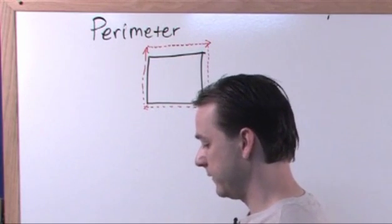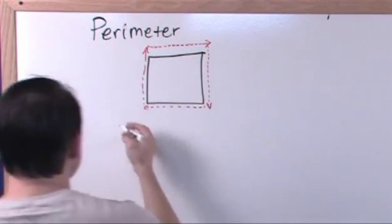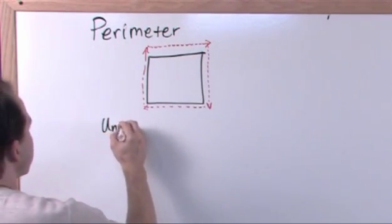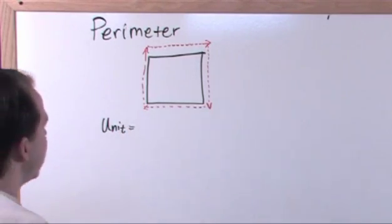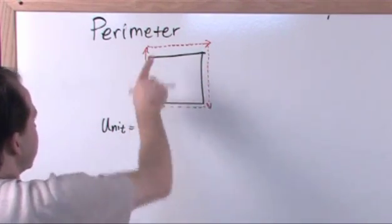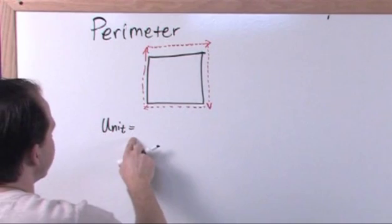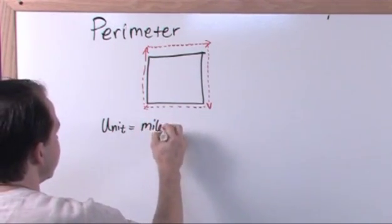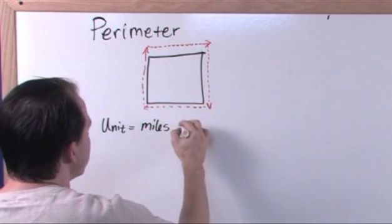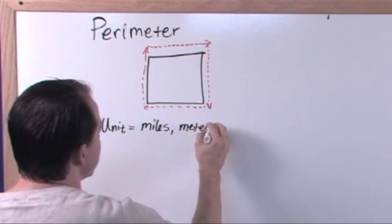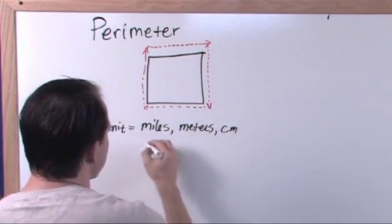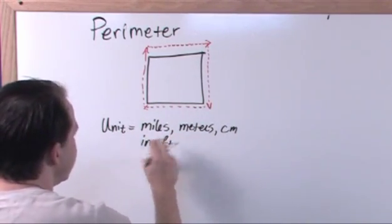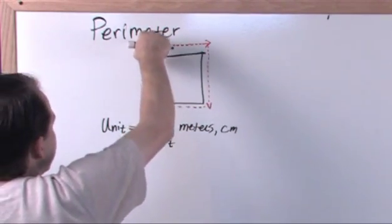So the unit, and this is going to be very important, the unit of perimeter is just distance, because you're just walking around the edge there. So the unit of perimeter could be miles if this were a really big square, or meters, or centimeters, or inches, or feet, or any unit of length.